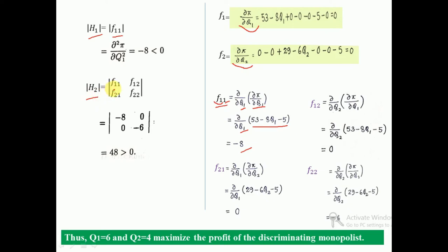Now let us calculate H2. We already have f11 = −8. We need f12, f21, and f22. f12 means differentiating f1 with respect to q2. Since f1 = 53 − 8q1 − 5, differentiating with respect to q2 gives f12 = 0.